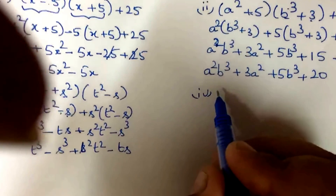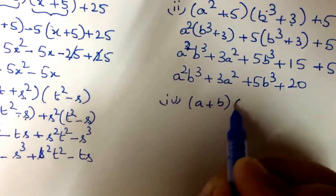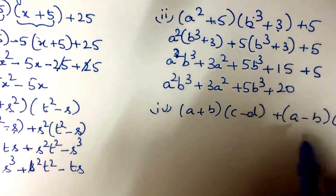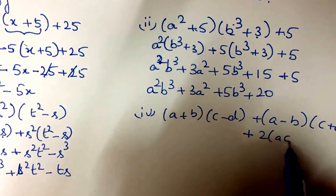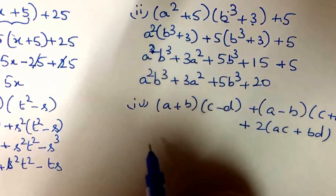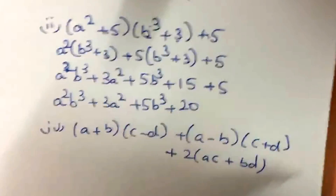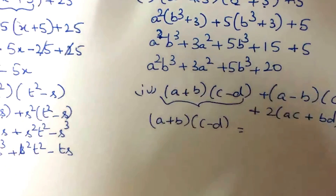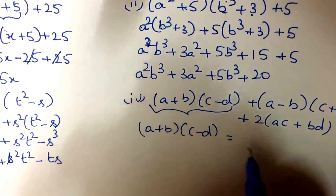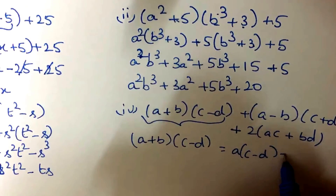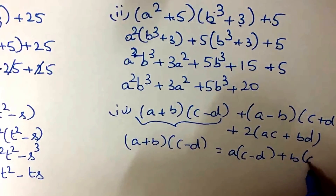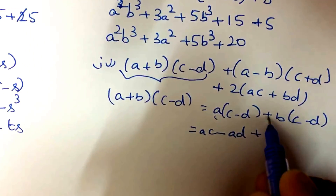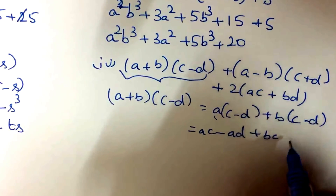Equation number 4: (a + b)(c - d) + (a - b)(c + d) + 2(ac + bd). Multiplying the first expression (a + b)(c - d): a into (c - d) plus b into (c - d), which equals ac - ad + bc - bd.